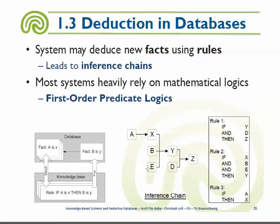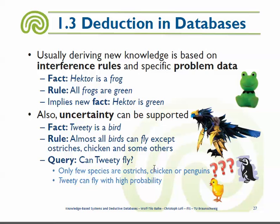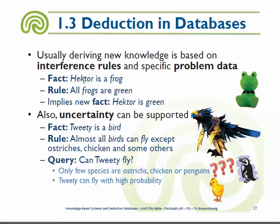We keep adding knowledge without modifying the database — just from the existing facts we get additional information. For example, a stored fact might be 'Hector is a frog,' and there is a rule that all frogs are green. We can then conclude that Hector is green, without storing that fact explicitly. In a traditional database you search and don't find it, but with additional rules we don't need to store that information.